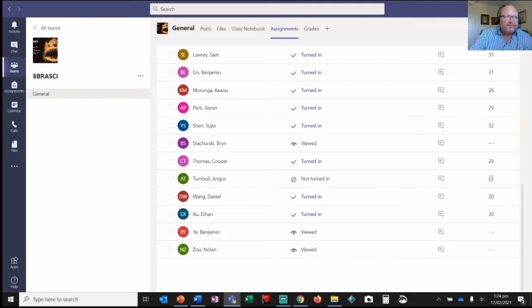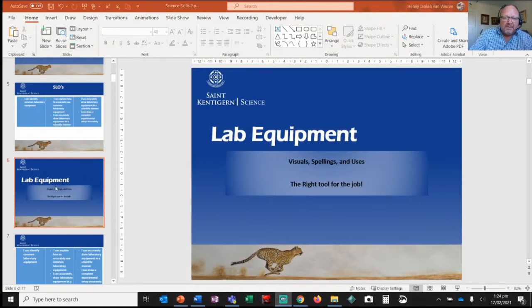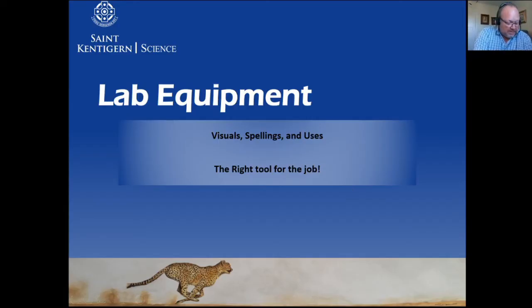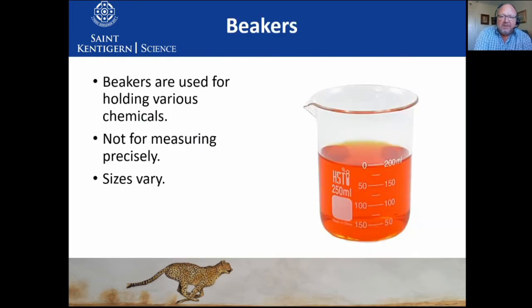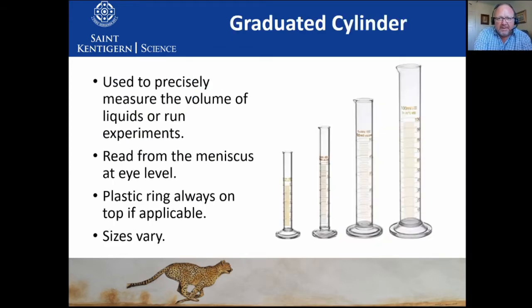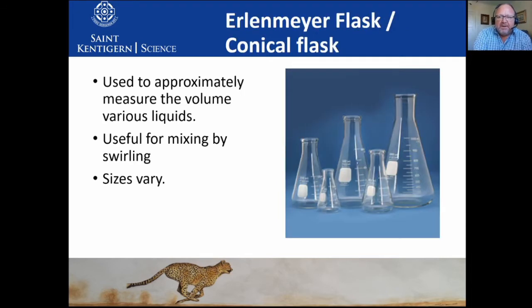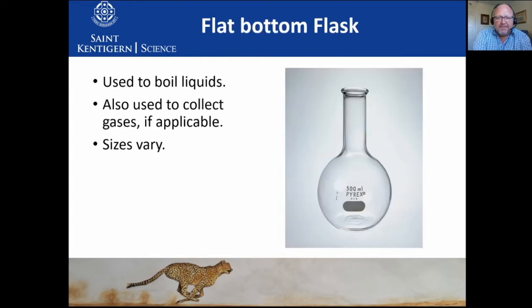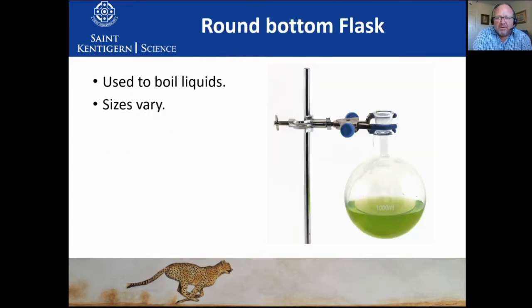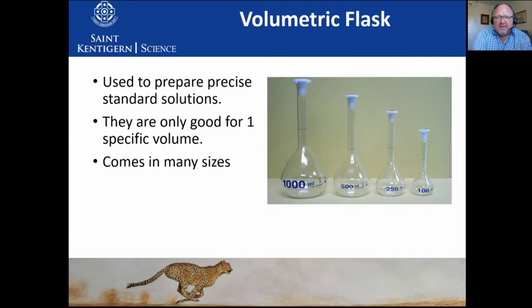Now let's have a quick recap. As you can see here, we looked at some lab equipment. Beakers are not for measuring — they are simply for holding large volumes of fluid. A measuring cylinder is for measuring. A conical flask is for holding volumes of liquid and also for doing experiments in. A round bottom flask, flat bottom flask, and volumetric flask — you can use these to measure with.